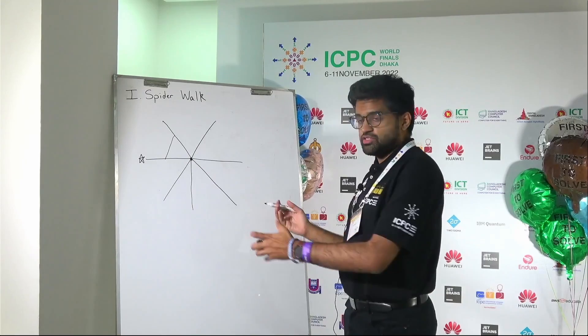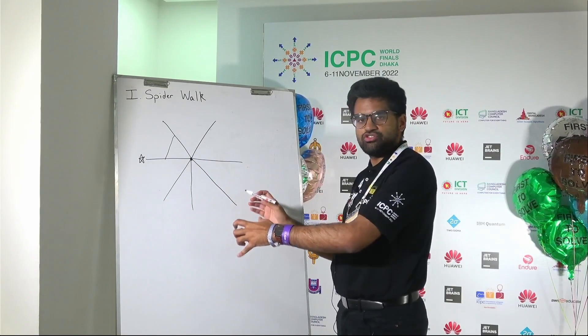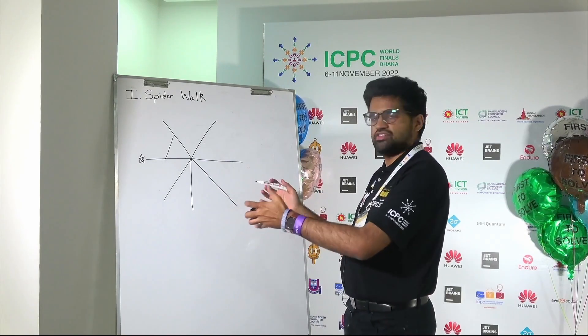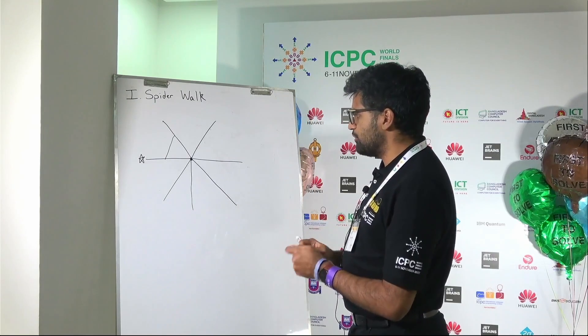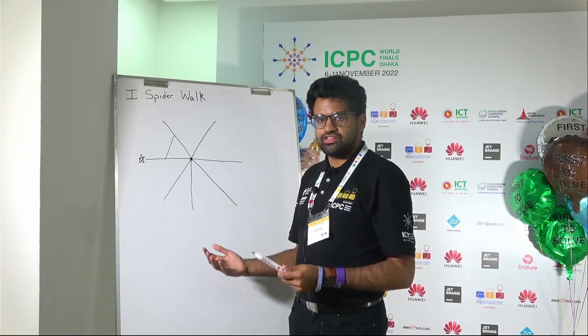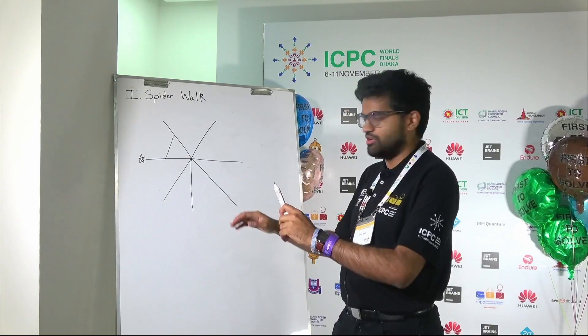The bounds on this problem are pretty big. The number of strands is up to two hundred thousand and the number of bridges is up to five hundred thousand. So one way to start to approach this problem is to consider what happens if we just have strands and no bridges.